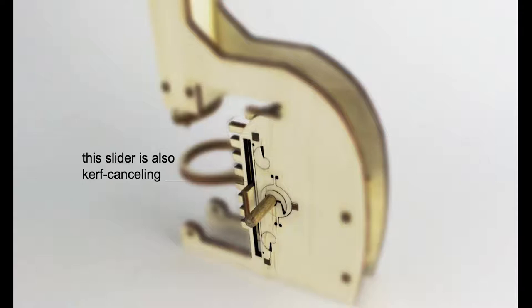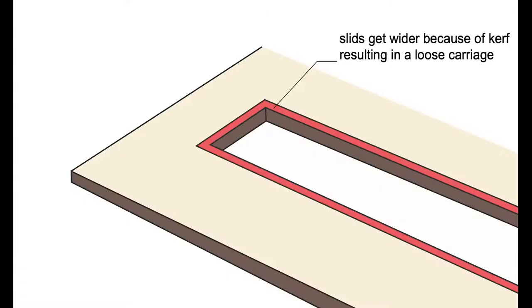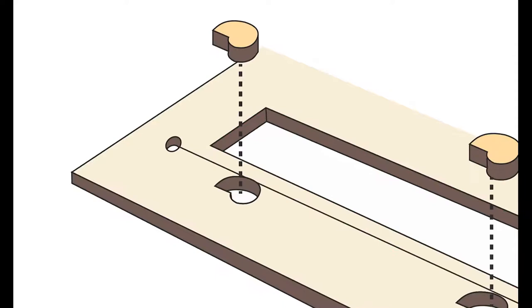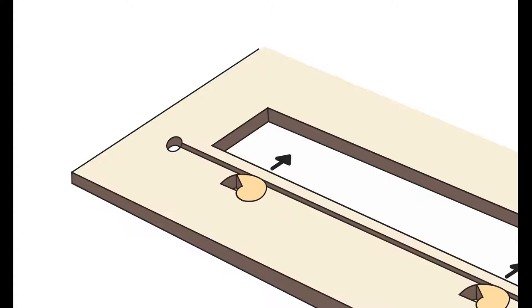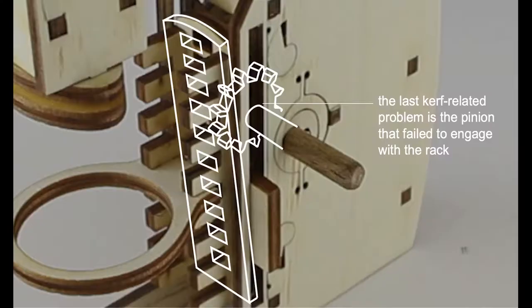We also modified this slider to become kerf canceling. The slit of the slider gets wider because of kerf, resulting in a loose carriage. We solve this by adding springs next to the slit and inserting two jammers to jam it in place. This narrows down the slit by exactly the amount of material removed due to kerf.